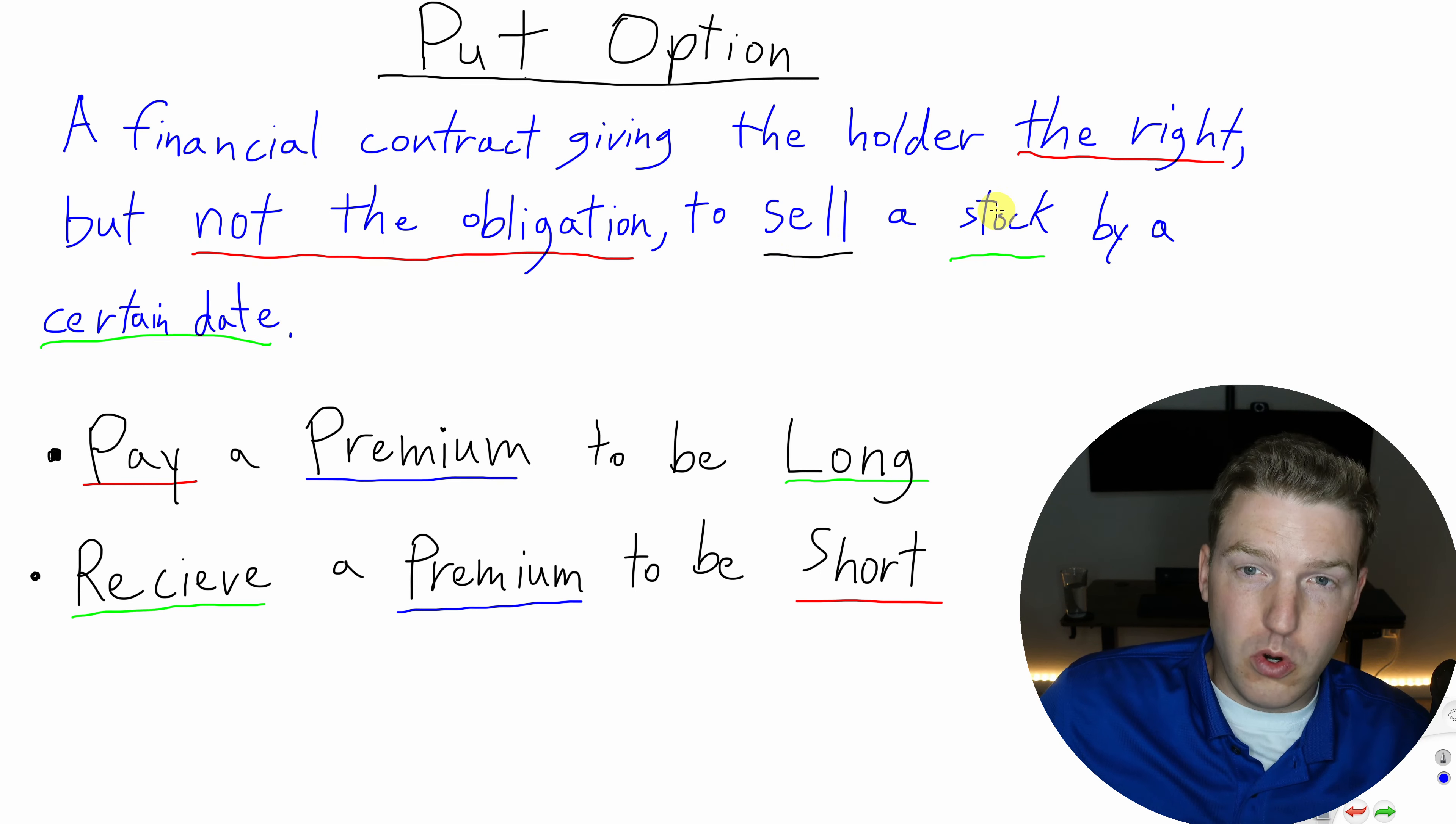Now, every single word in this definition is exactly the same as the call option, except for this one: sell. The call option was the right to buy a stock by a certain date, put option is the right to sell by a certain date.